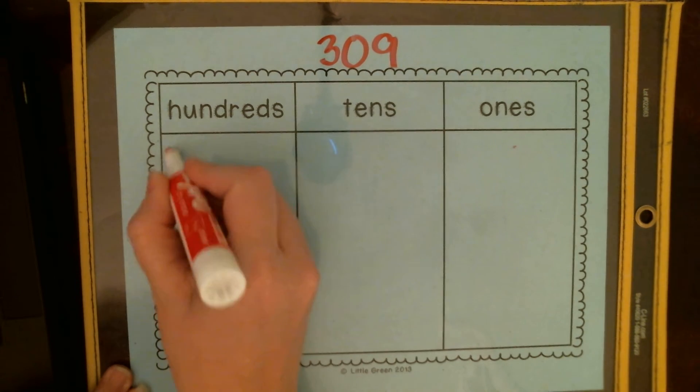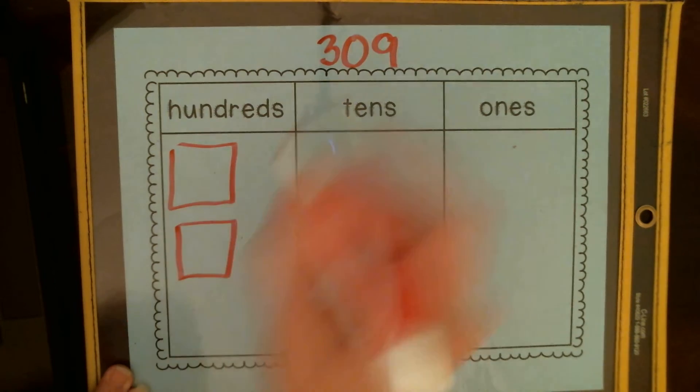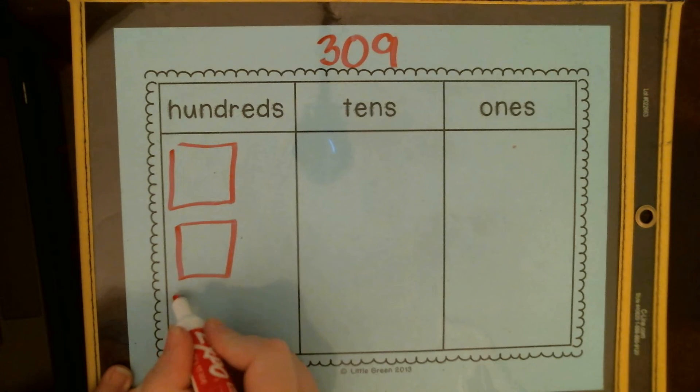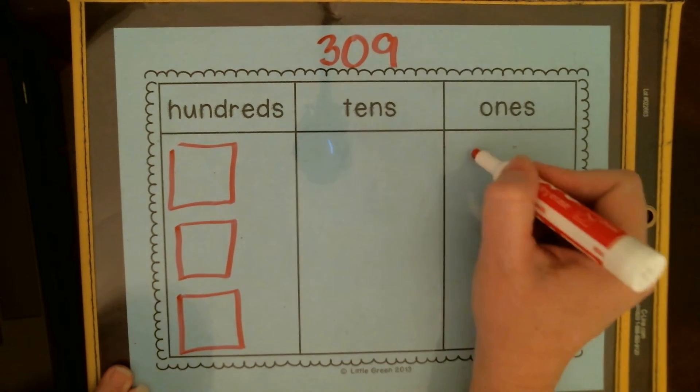That's how many hundreds there are. I have three of those hundreds flats. No tens, nine ones.